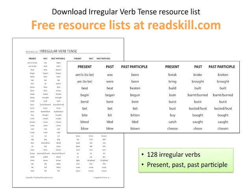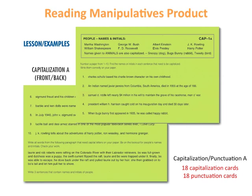It contains present, past, and past participle forms for 128 irregular verbs. Complete card sets review and drill all capitalization and punctuation rules.